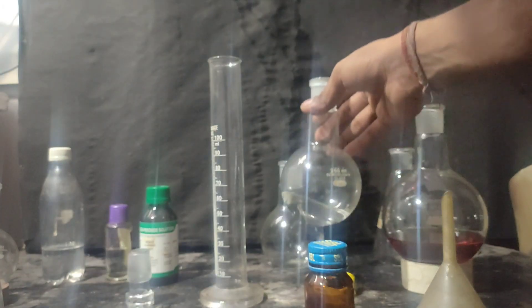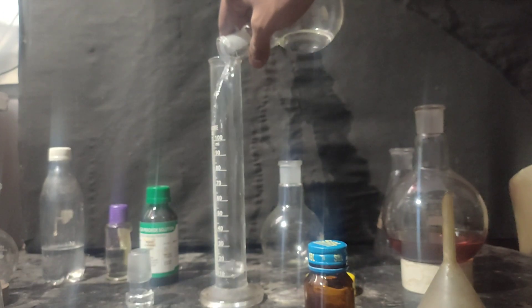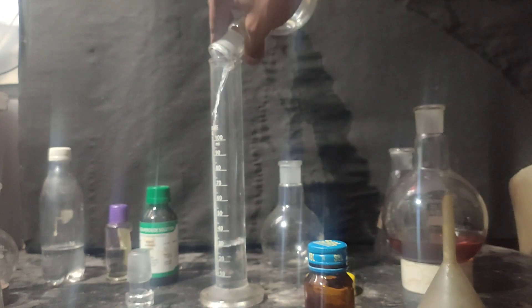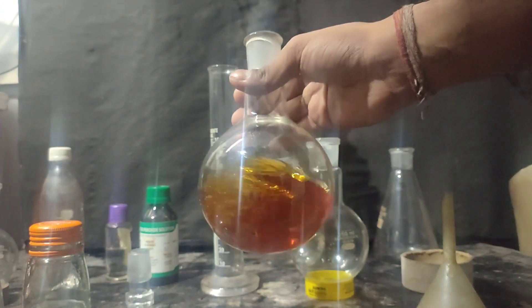This is the fourth fraction that came above 105 degree celsius. And its volume is around 35 ml. This consists mostly of toluene. And this is the leftover petrol.